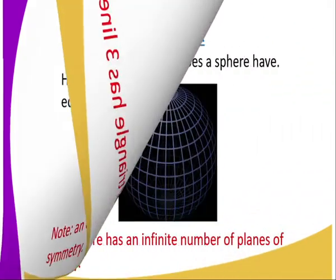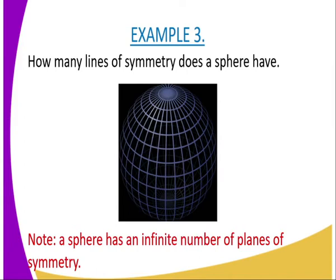Another example, we have example number three here. We have how many lines of symmetry does a sphere have? A sphere is like a ball, a football ball, a soccer ball, or a football ball.